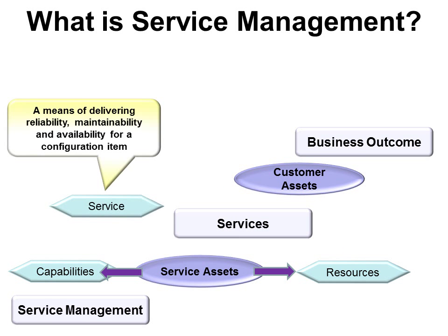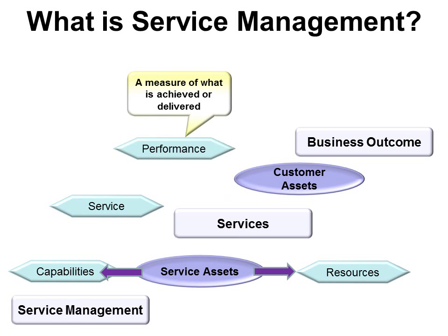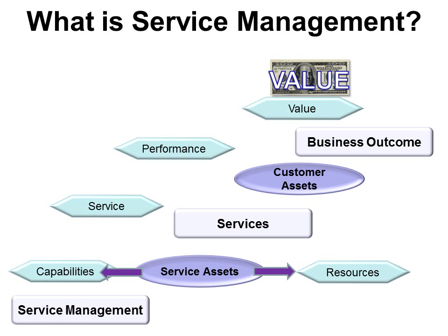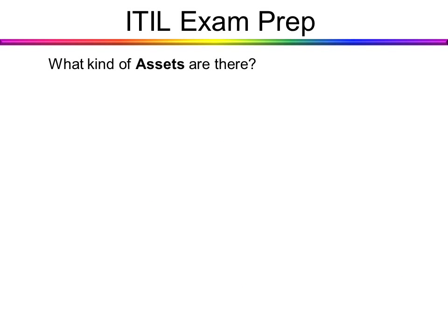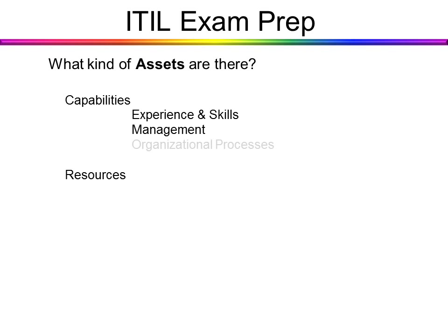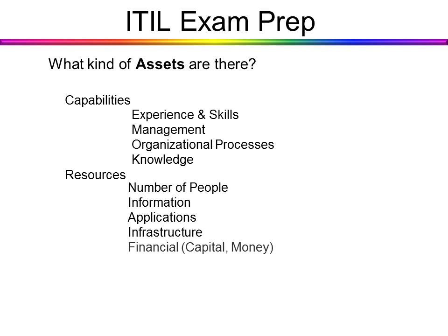Service is a means of delivering reliability, maintainability, and availability for a configuration item — it's kind of like having a problem with your refrigerator and calling the service repairman. Performance is a measure of what is achieved or delivered. And value, as you remember, has utility and warranty. What kinds of assets are there? There are two kinds: capabilities and resources. Capabilities is how well we can do something, and resources are the actual tools — the number of people and the tools it takes.